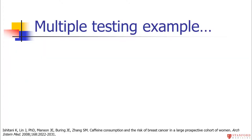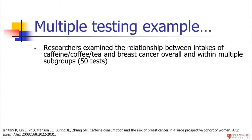Let me give another multiple testing example from the medical literature. Researchers looked at whether caffeine, coffee, and tea drinking influences breast cancer risk. They asked women about their caffeine, coffee, and tea consumption and tracked who got breast cancer. They looked at this in many ways — caffeine, caffeinated coffee, tea — and also broke it down by type of breast cancer and type of woman, such as post-menopausal versus pre-menopausal. They ended up running about 50 statistical tests.